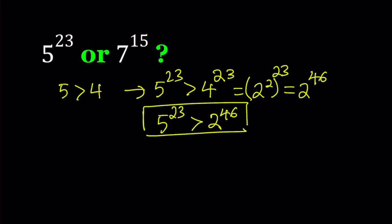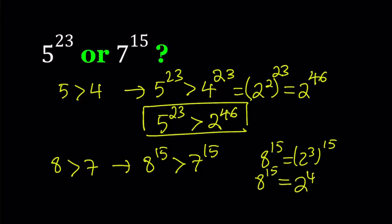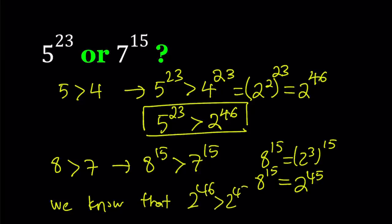Now let's do something for the 7. 7 is also close to a power of 2, because it's less than 8. In other words, 8 is greater than 7. Therefore, 8 to the power 15 is greater than 7 to the power 15. And we know that 8 to the power 15 is 2 to the power 3, raised to the power 15. Therefore, 8 to the power 15 can be written as 2 to the power 45, because 3 times 15 is 45. And we know that 2 to the power 46 is greater than 2 to the power 45.